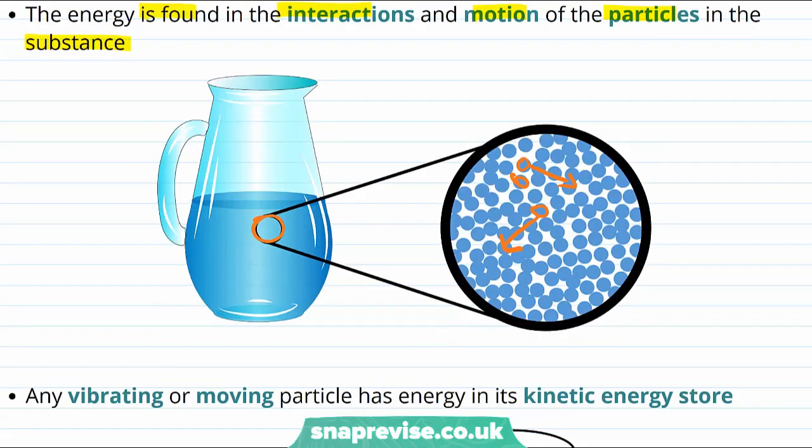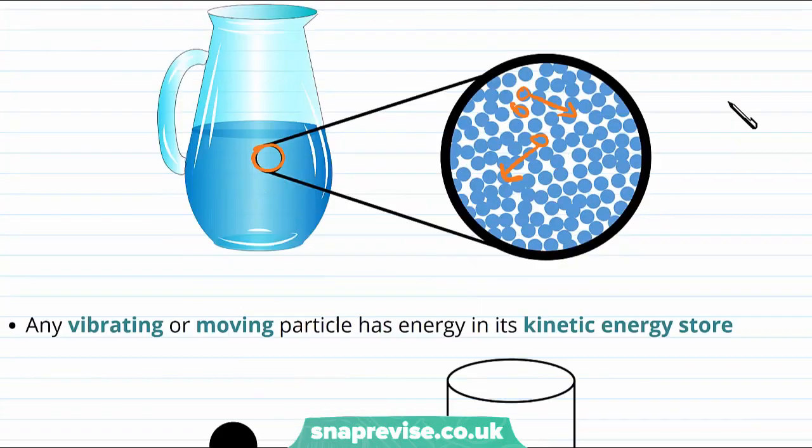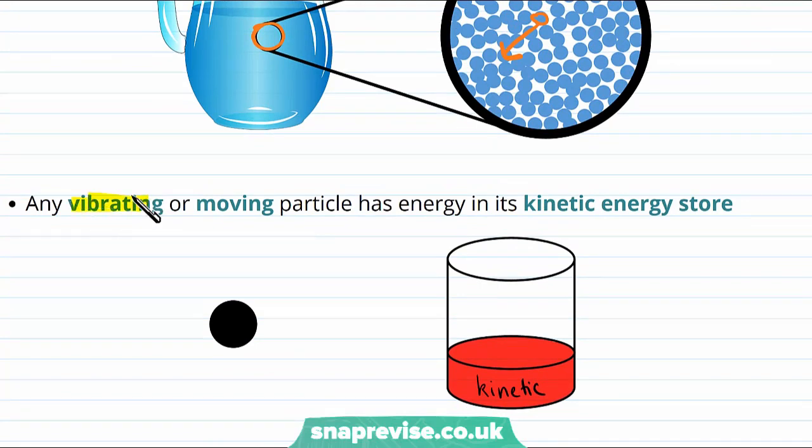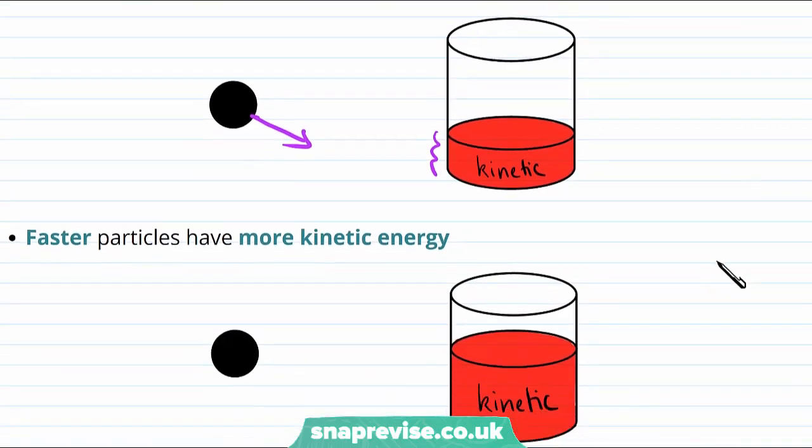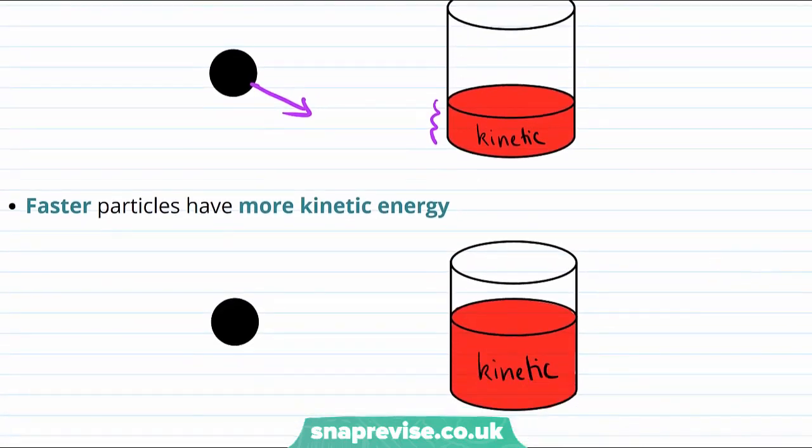So let's look at these ideas in more detail. For example, any vibrating or moving particle has energy in its kinetic energy store. So here is a particle that's moving and here is the energy in its kinetic energy store. And we know that faster particles will have more kinetic energy. So a particle with all this extra energy in its kinetic energy store must be moving faster.